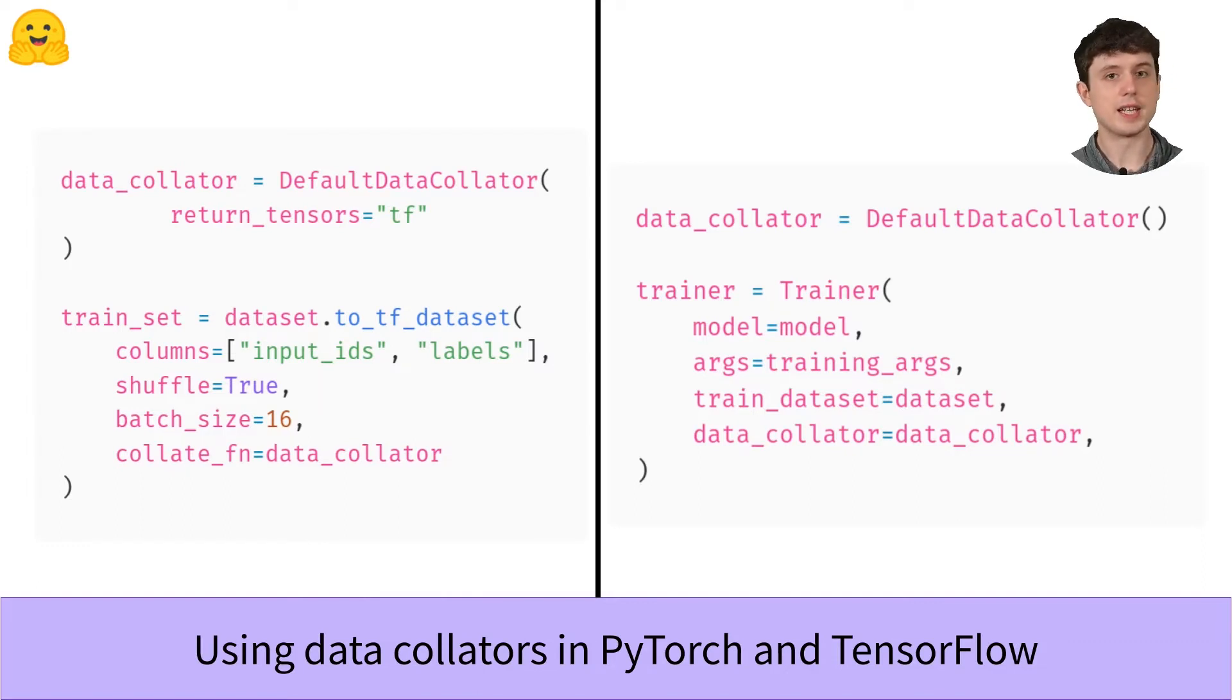Also note that all of our collators take a return_tensors argument. You can set this to PT to get PyTorch tensors, TF to get TensorFlow tensors, or NP to get NumPy arrays. For backward compatibility reasons, the default value is PT. So PyTorch users don't even have to set this argument most of the time.